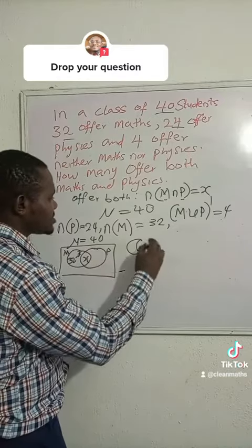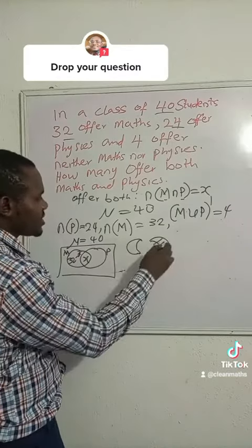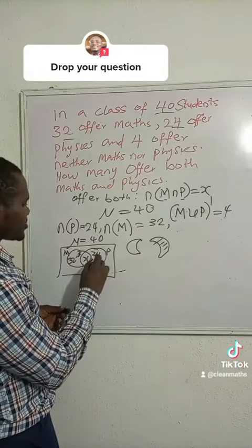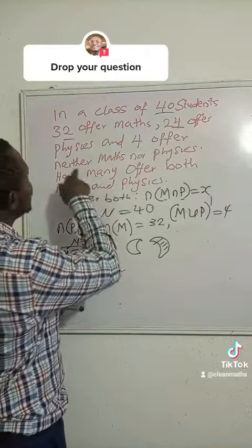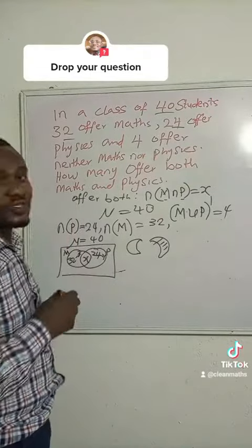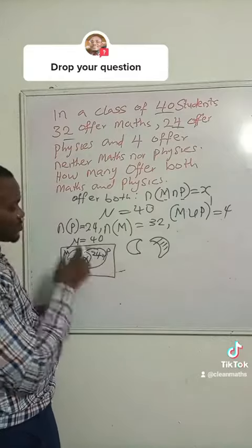The same thing happens to p. We have taken this as x, so the remaining people have p which is 24, so we say 24 minus x. And the question says 4 offer neither, that's the complement, so it's going to be outside the two brackets, which is 4.